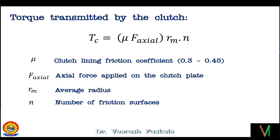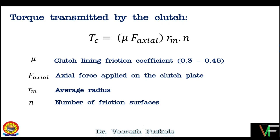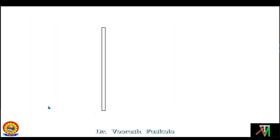With a uniform pressure over the contact area, the analysis is based on the uniform pressure condition. However, as time progresses, wear takes place between the contacting members, which may alter the contact pressure, and uniform pressure may no longer prevail. Hence the analysis is then based on the uniform wear condition. If the clutch is new, pressure is distributed uniformly; if the clutch is old, uniform wear theory is applied.